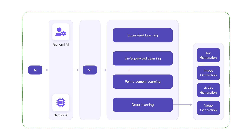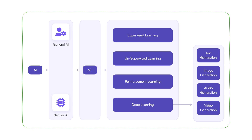So where do large language models fit in this entire picture? LLMs are a part of the text generation capabilities in deep learning. LLMs help you generate text using generative pre-trained transformers and also help you recognize text. So large language models are part of the text generation capabilities of deep learning, which is part of machine learning, which is part of the broader umbrella of artificial intelligence.